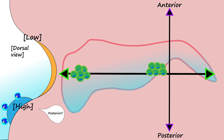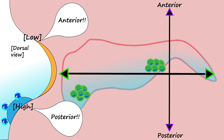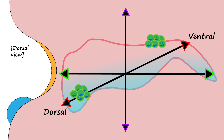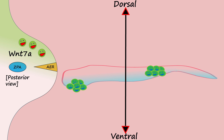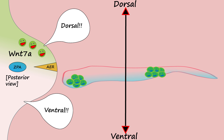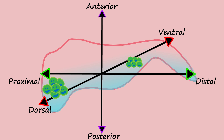Cells exposed to higher concentrations develop tissues towards the posterior. Its presence above and absence below, along with some other molecules, tell cells to grow ventrally, controlling this last axis.